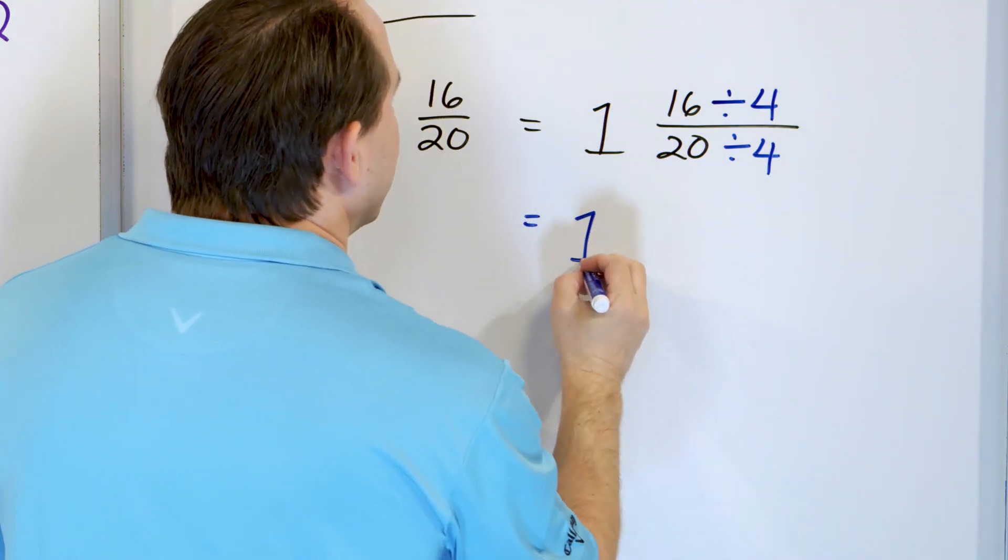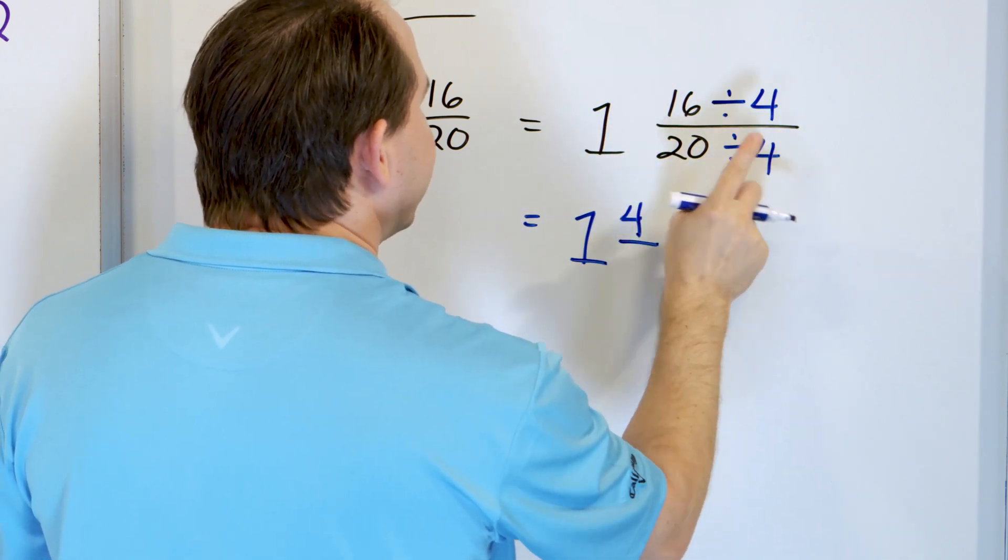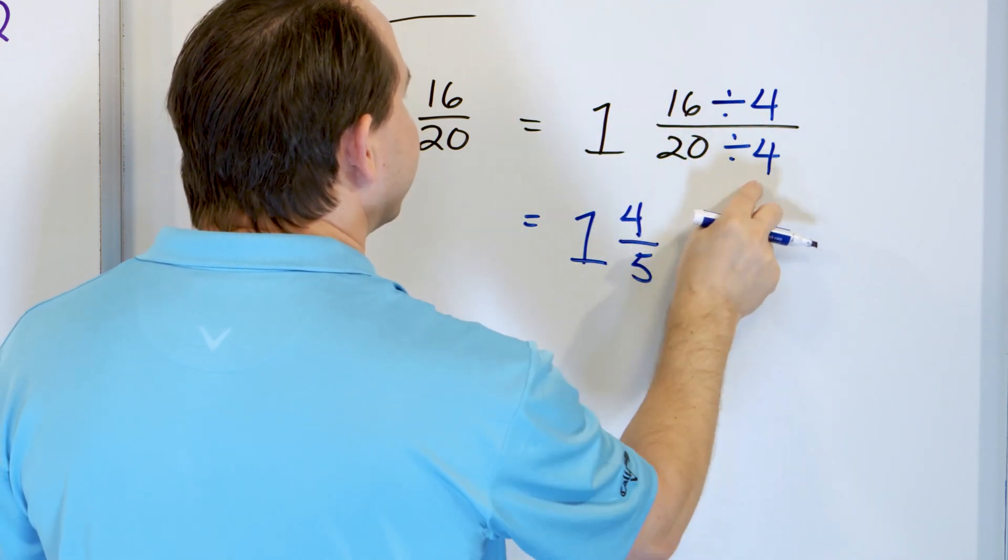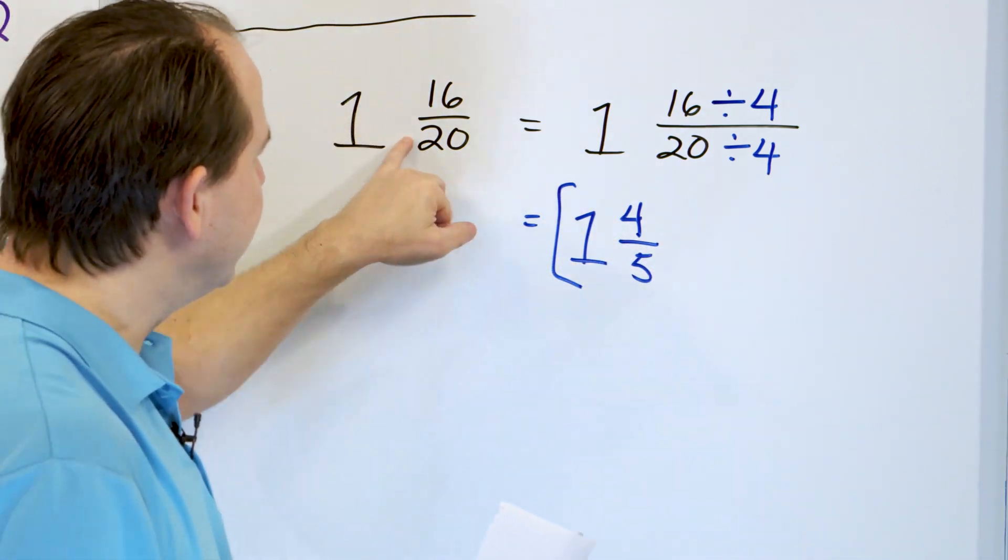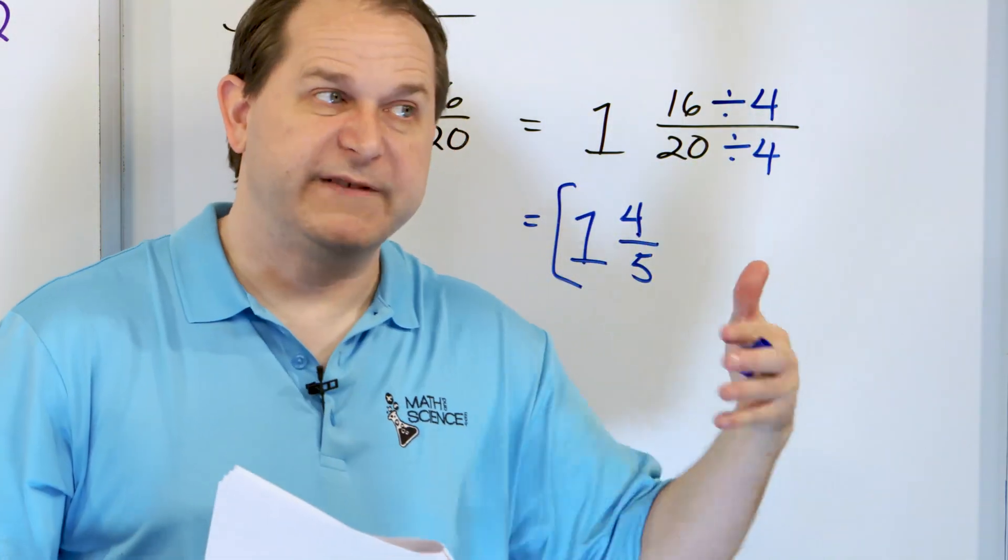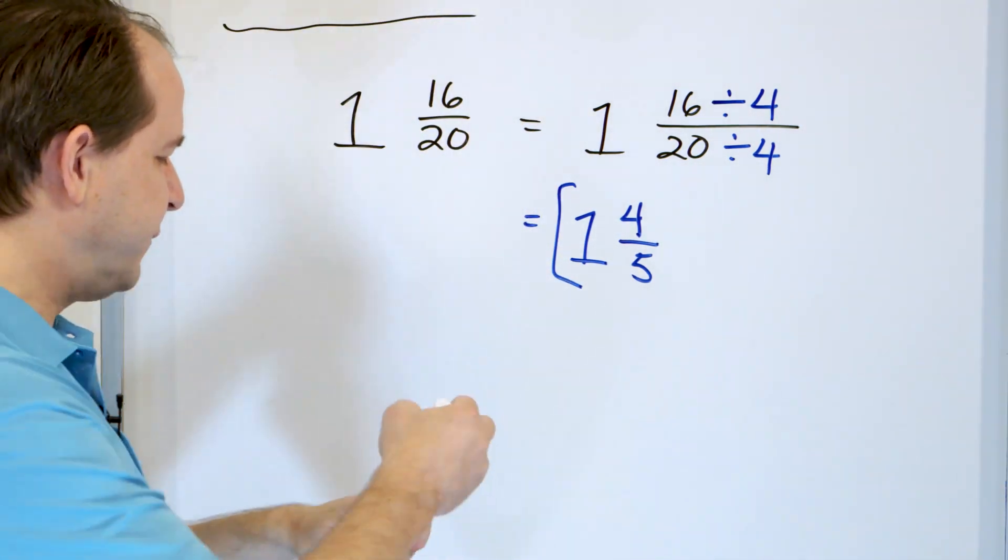What do we get? We get 16 divided by 4 is 4 because 4 times 4 is 16. 20 divided by 4 is 5 because 5 times 4 is 20. So the answer is 1 and 4/5ths. If I divided by 2, then I would get some answer, but I would be able to divide by 2 again, and then I would end up in the same exact place.